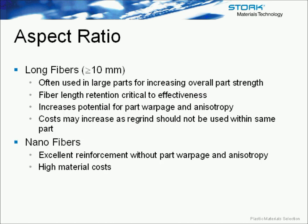Long fibers are often used in very large parts to increase part strength. However, fiber length retention is very critical. If you have a small part, one with lots of right angles, or one with thin walls, you have the potential to decrease the fiber length as it goes through the part during processing. The more you decrease fiber length during molding, the less effective that fiber is going to be. Long fibers also have potential for part warpage and anisotropy, and costs are a factor because you cannot utilize regrind — regrinding the part destroys the fiber length.